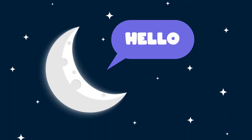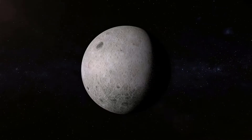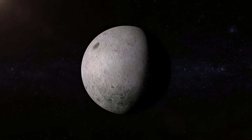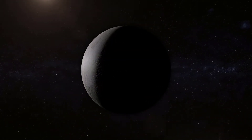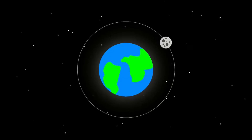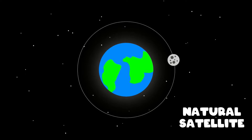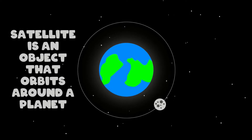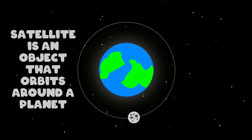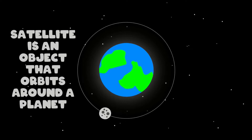Hello friends! I am going to tell you the most incredible things about our fascinating moon. The first thing you should know is that the moon is a natural satellite, and a satellite is an object that orbits around a planet — that means it goes around and around without stopping.